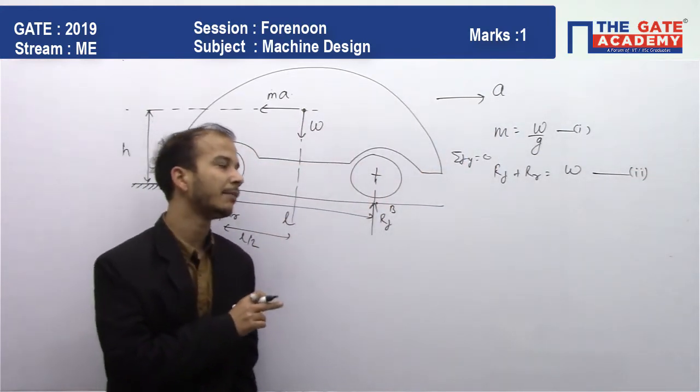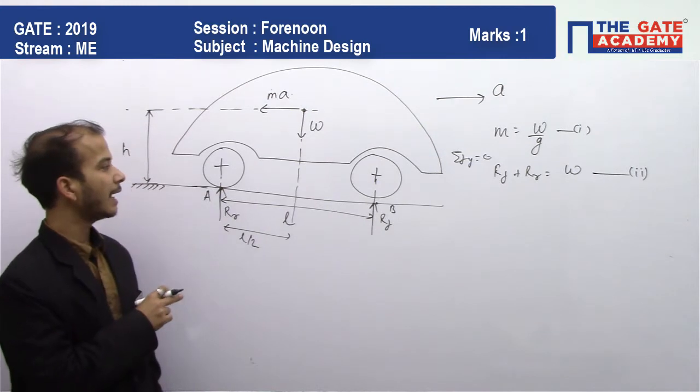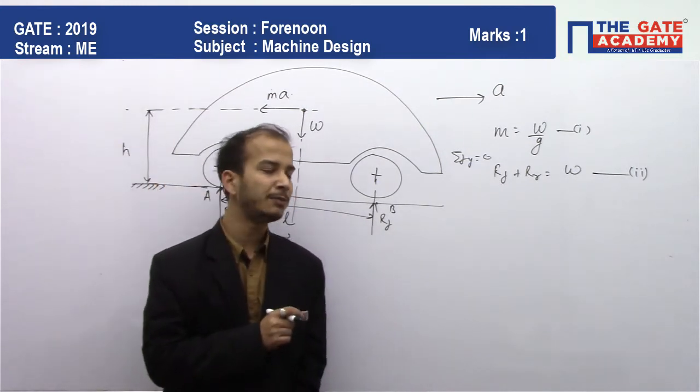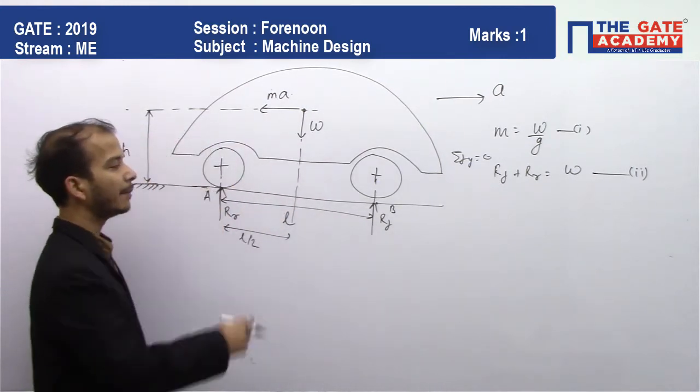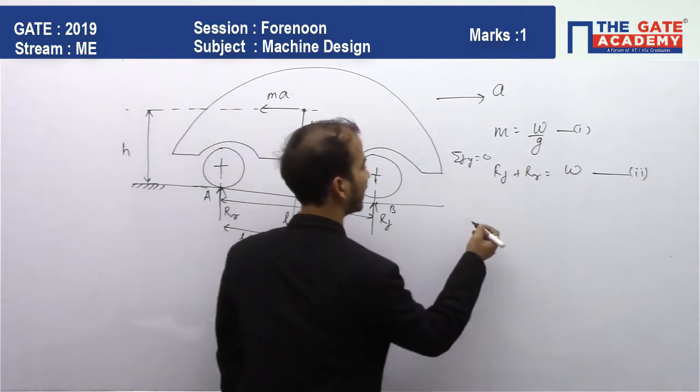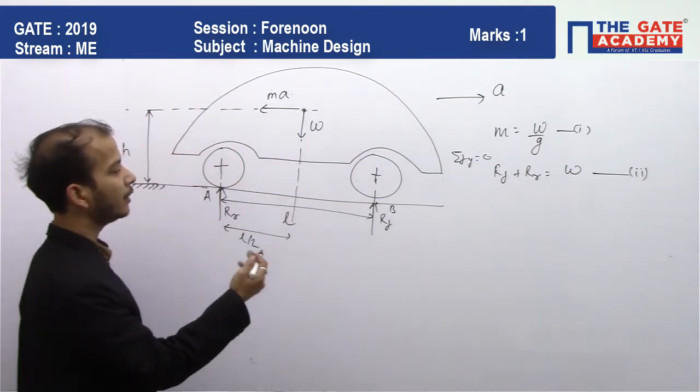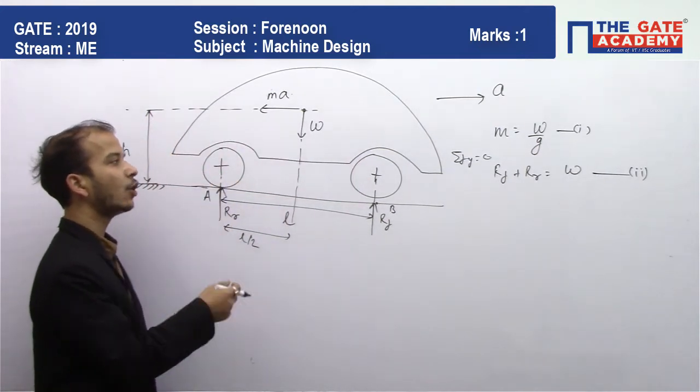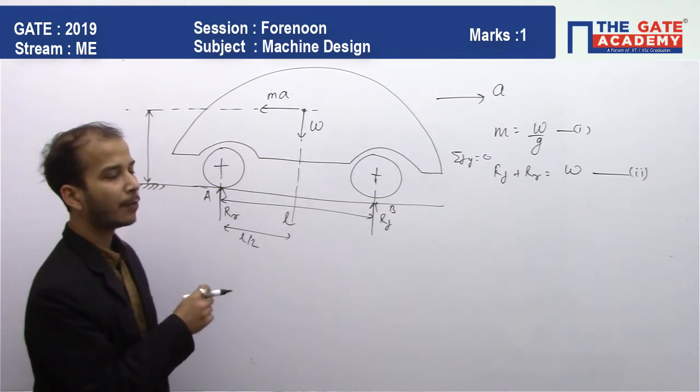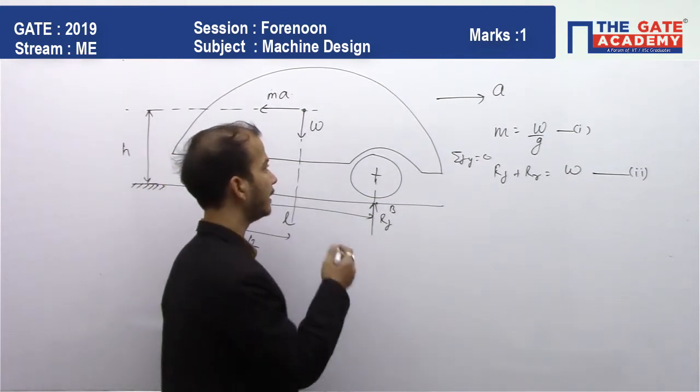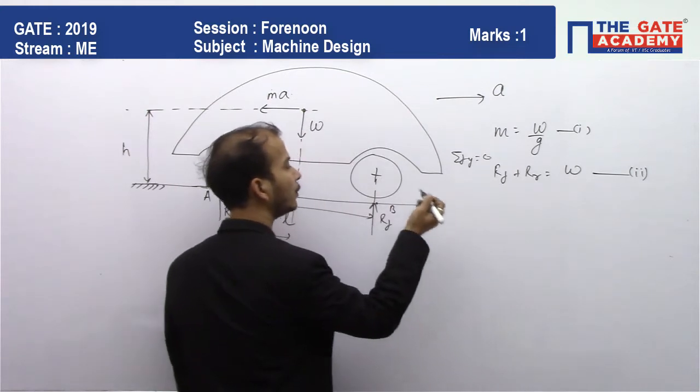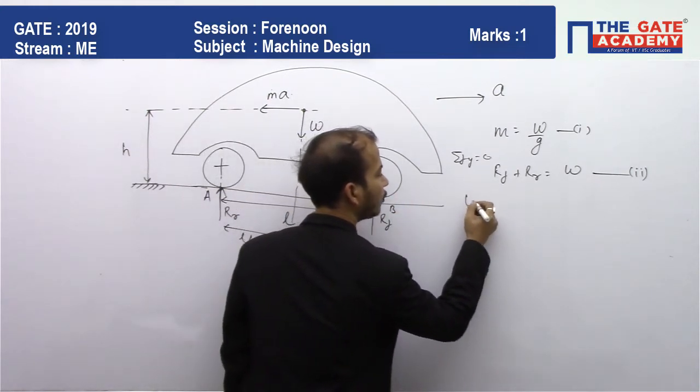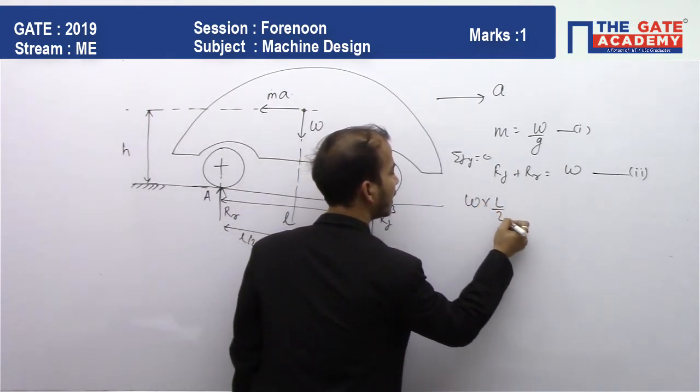Rf plus Rr must equal W. The net moment about any point must equal zero. If we take point A, the net moment is zero. Then Rf is anti-clockwise, ma is anti-clockwise, and W is clockwise moment.